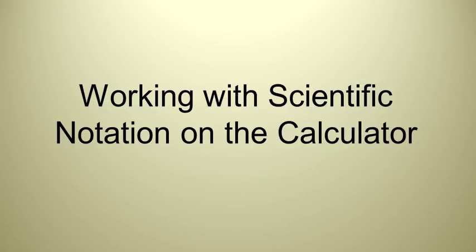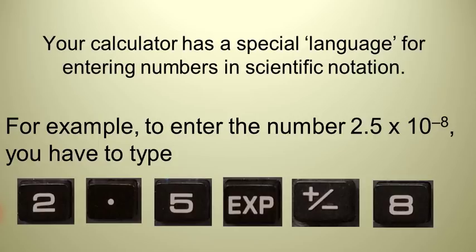In order to work with scientific notation, you're going to use some special keys on your calculator. Your calculator has special keys. If you take the number 2.5 times 10 to the negative 8, for example,